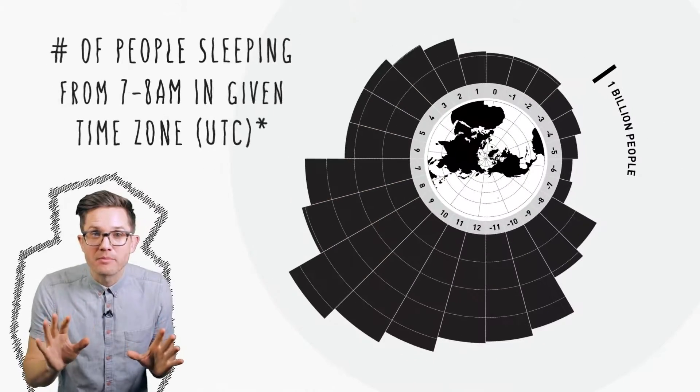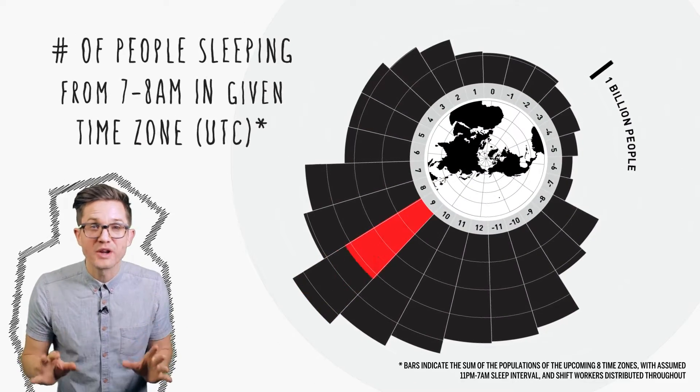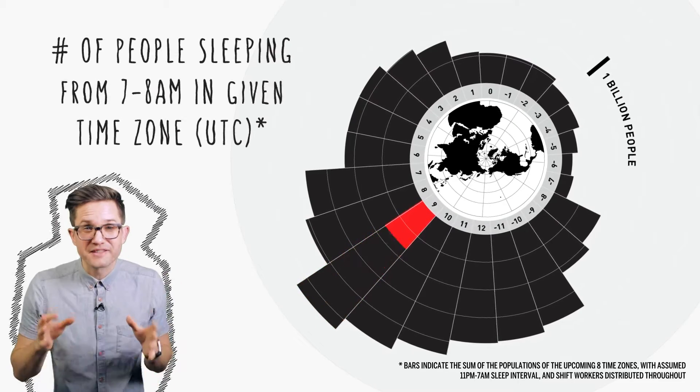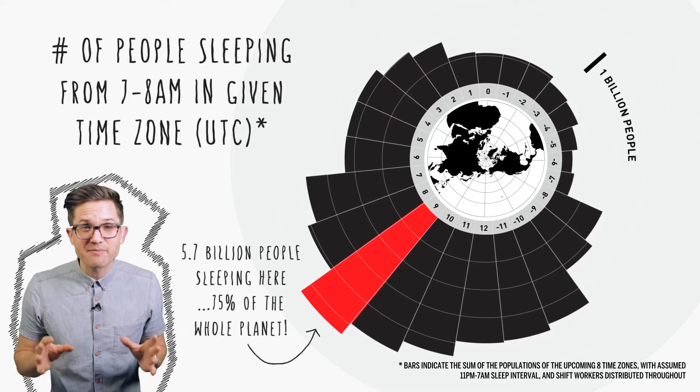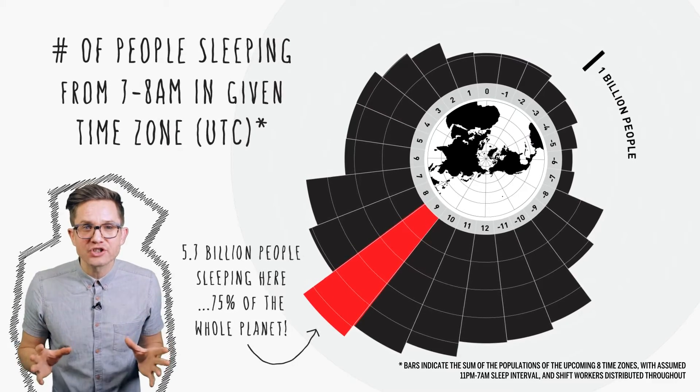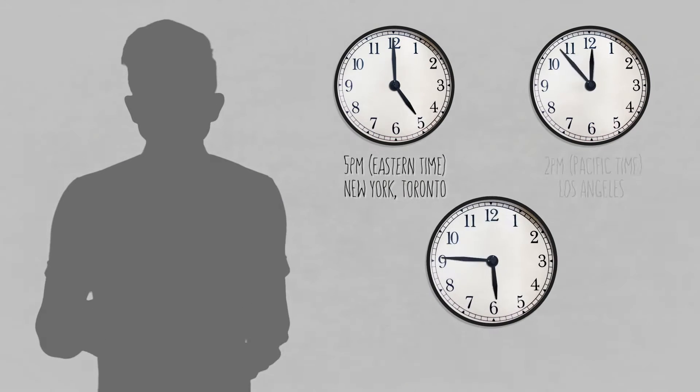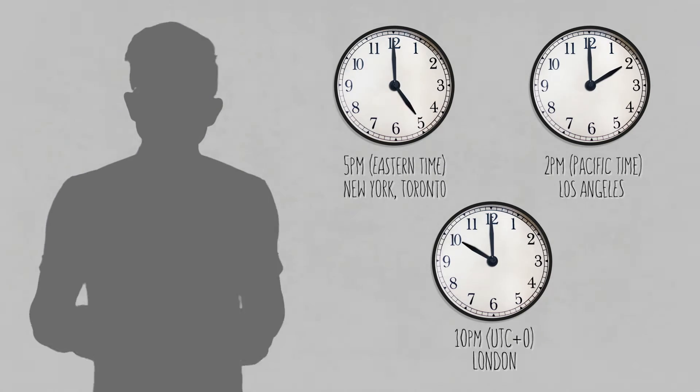It's 7am in UTC plus 9. China and India haven't woken up yet. This is when the most people are asleep. That's 5.7 billion people, or about 75% of the earth's entire population. All asleep. Think about that. At 5pm Eastern Time, or 2pm Pacific, or 10pm London Time, 75% of the world is sleeping.